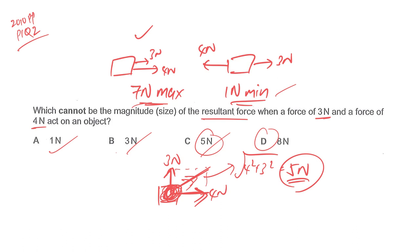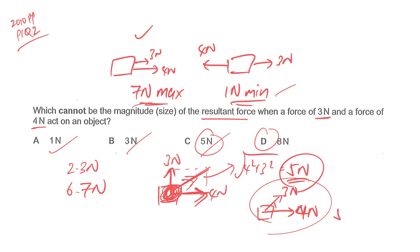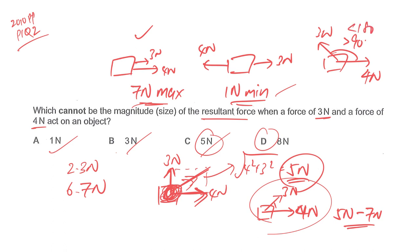Even if asked whether 2.3 Newton or 6.7 Newton is possible, the answer is yes, because there are infinite possibilities depending on the angle between the forces. If the angle is less than 90 degrees, the resultant is between 5 and 7 Newton. If the angle is greater than 90 but less than 180 degrees, the resultant is between 1 and 5 Newton. For an exact resultant at a specific angle, you would need to construct a vector diagram.